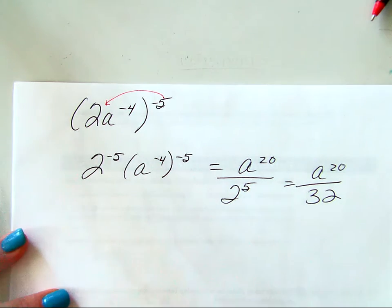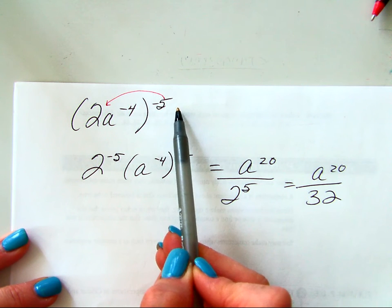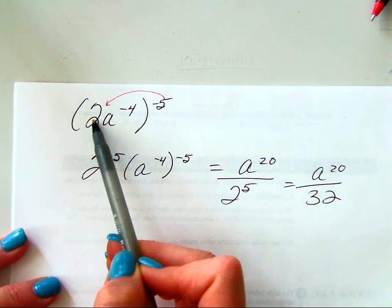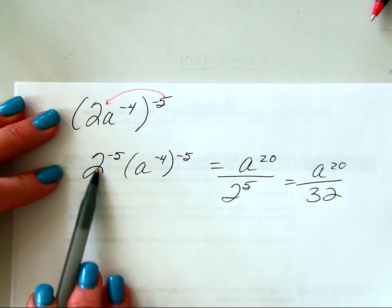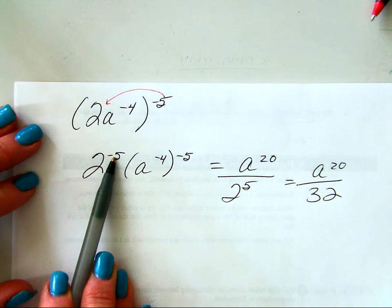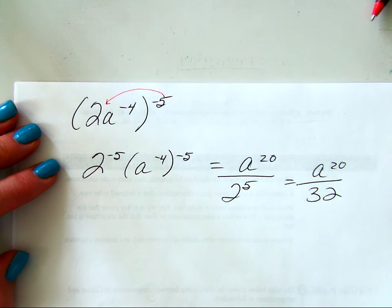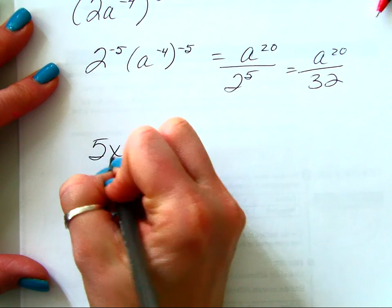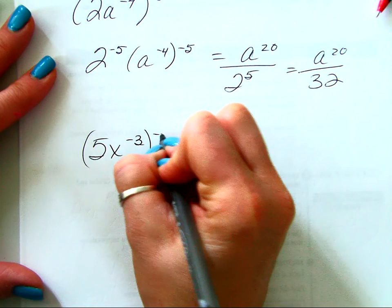If both the exponent within the base and the exponent outside are negative, it makes the variable's result positive. But it still has an effect on the coefficient — the negative 5 means your 32 is not going to be in the numerator, it goes to the denominator. Let's do another one: 5x to the negative 3rd power to the negative 2nd power.